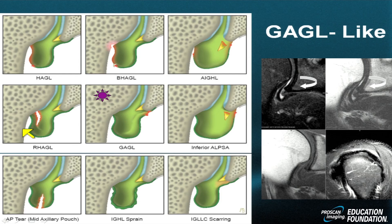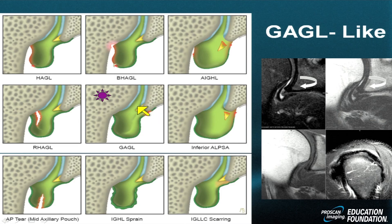Then the RAGL — the reverse HAGL — a tear or injury of the posterior aspect of the humeral insertion of the inferior glenohumeral ligament. Then the one we'll talk about today: the GAGL. This one's a bit tricky. The glenoid side of the inferior glenohumeral ligament is injured or torn, yet the labrum is preserved, although it may be a bit edematous.